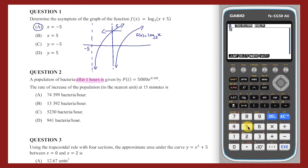this rate is equal to 5000e to the power of 0.18 times 0.25 multiplied by 0.18, which is 941, and so the answer is D.